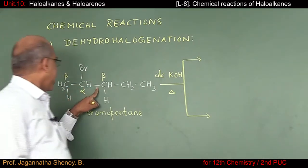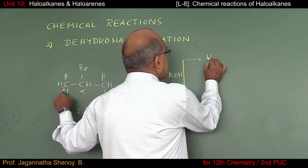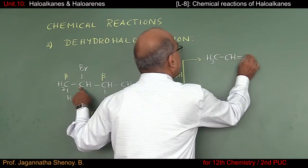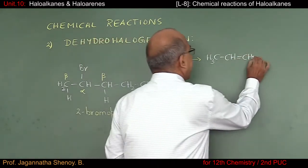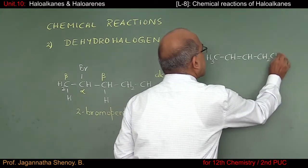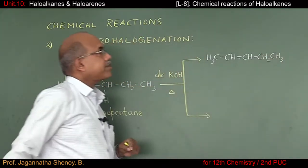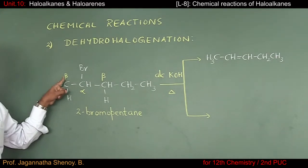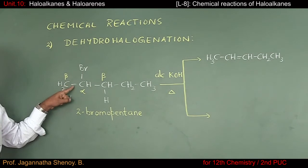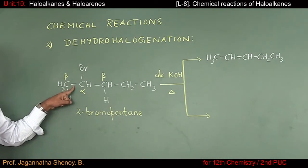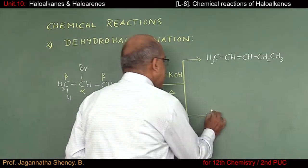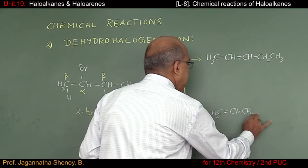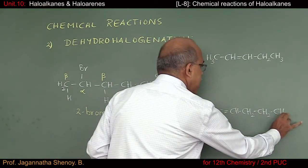The product in the first case is CH3-CH=CH-CH2CH3, which is pent-2-ene. On the other hand, if the beta hydrogen is removed from the other beta carbon atom, the double bond gets introduced there, and the product obtained would be CH2=CH-CH2CH2CH3, which is pent-1-ene.